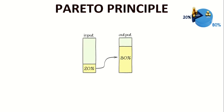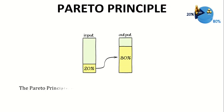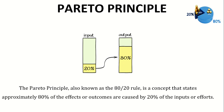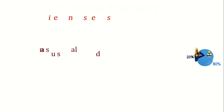The Pareto Principle, also known as the 80-20 rule, is a concept that states approximately 80% of the effects or outcomes are caused by 20% of the inputs or efforts. This principle has widespread applications in various fields, highlighting the importance of focusing on the vital few aspects that yield significant results. Let's explore the Pareto Principle with real-life examples from different domains.